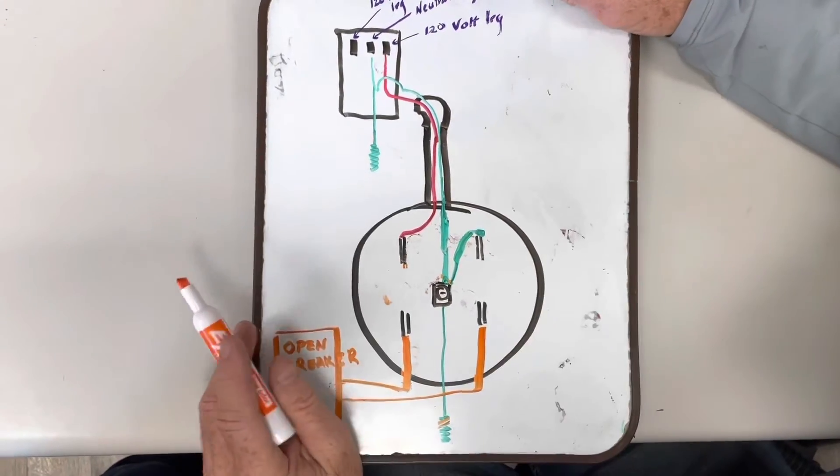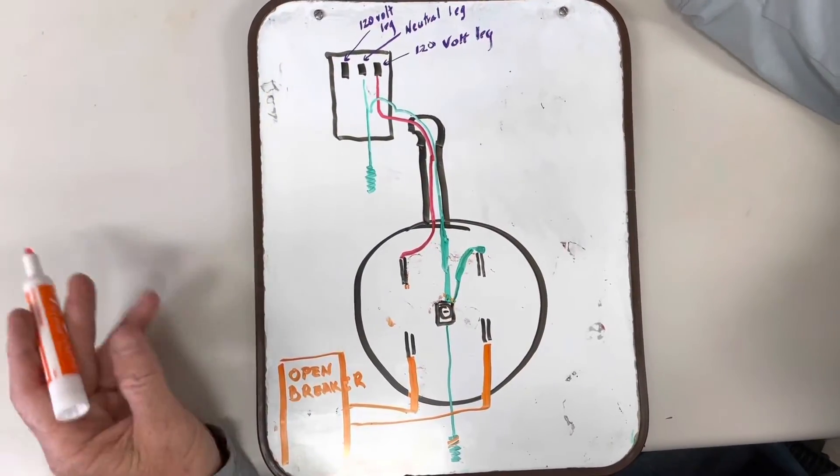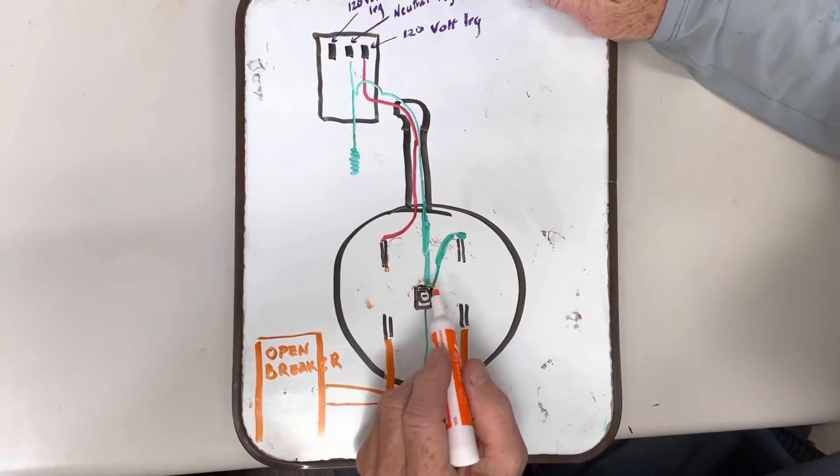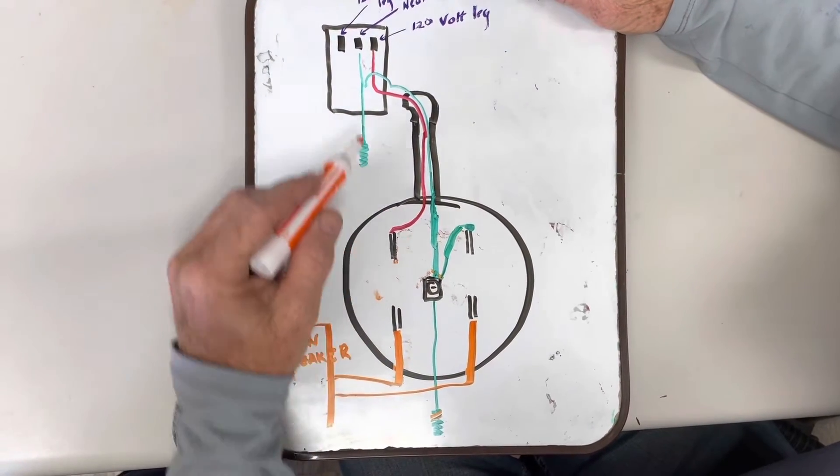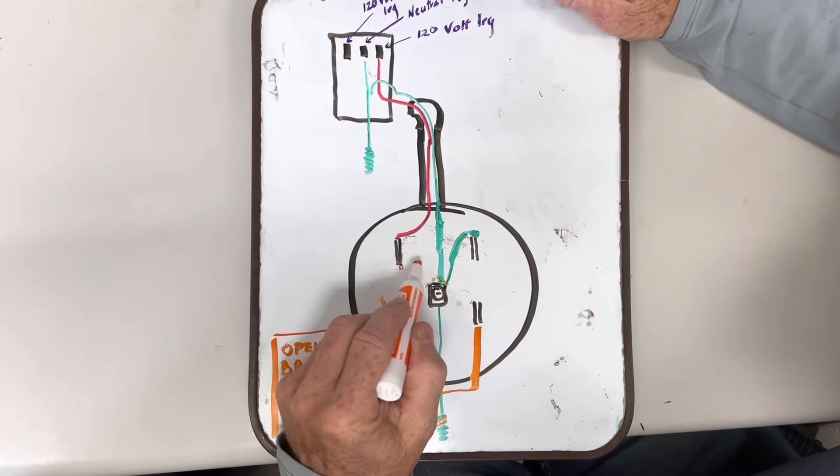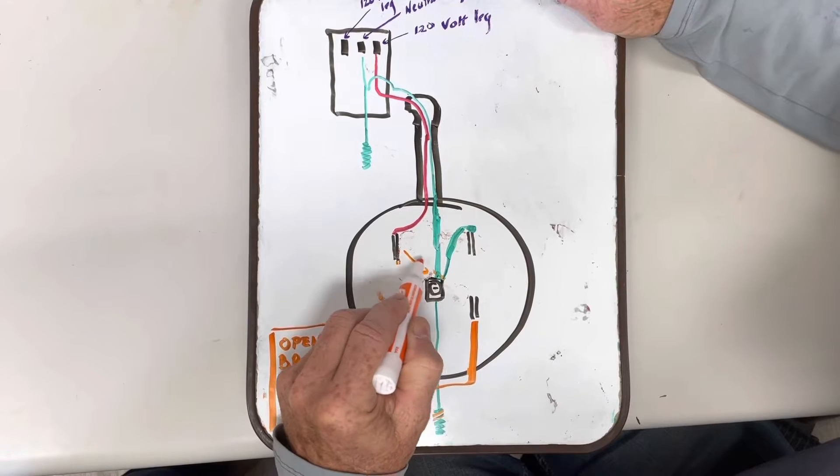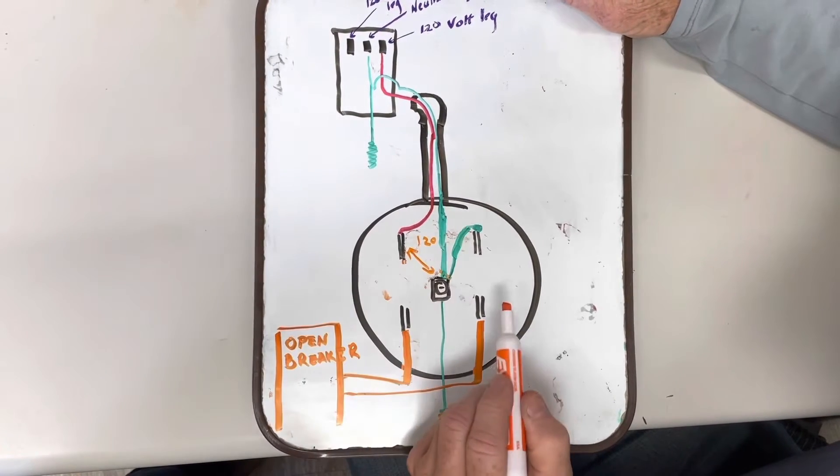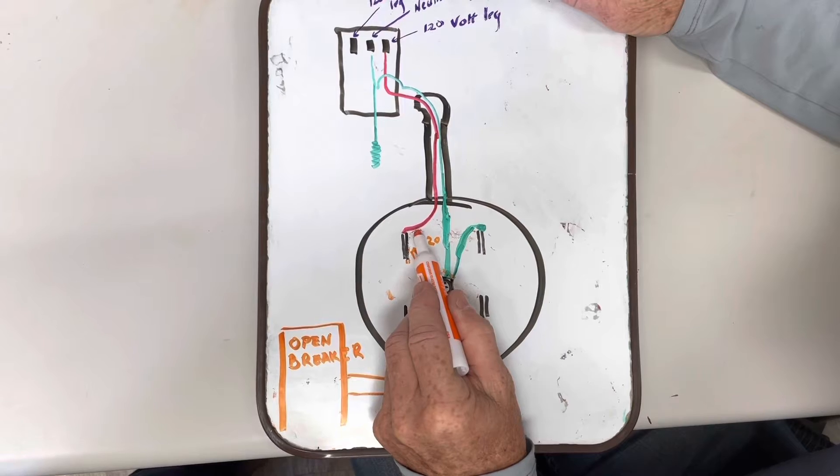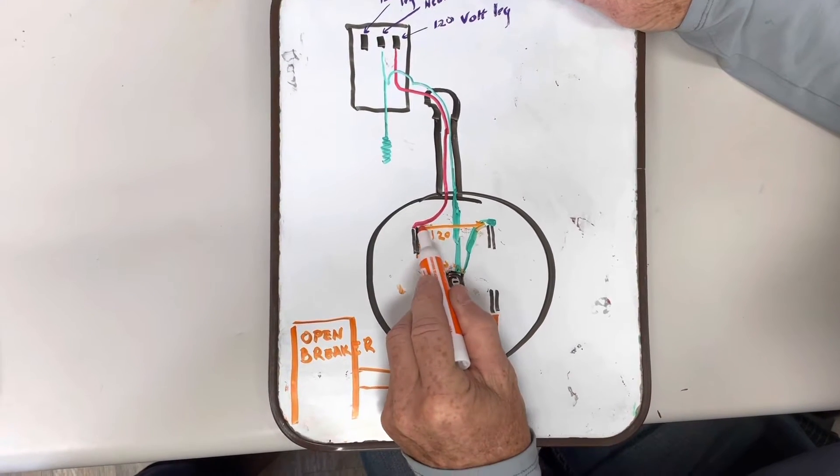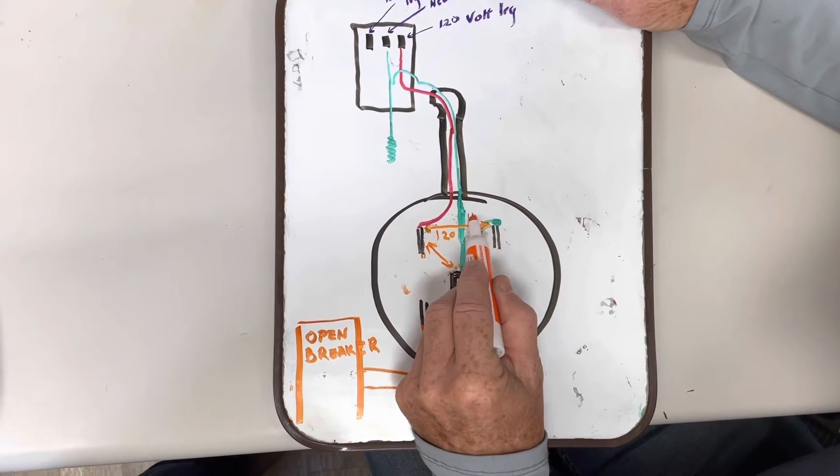So now the next check we're going to do when you come up on it is check your voltages. With the transformer energized, we're going to go from this lug to neutral and we're going to get 120 volts. We're going to go from this leg to this leg with the volt meter and we're going to get 120 volts.